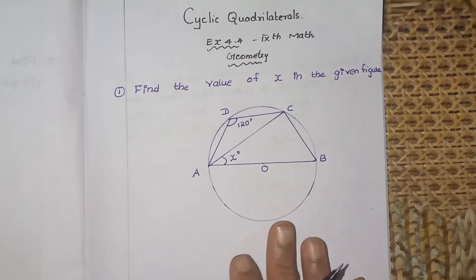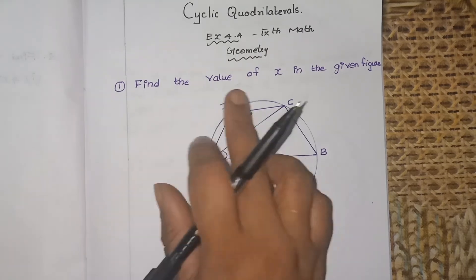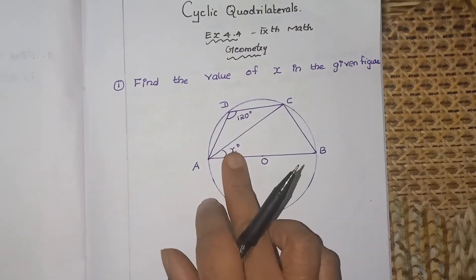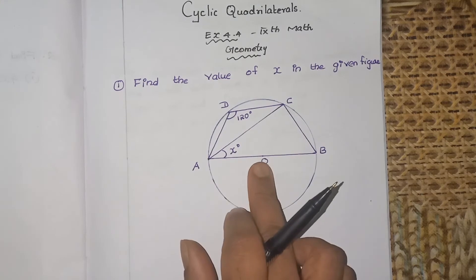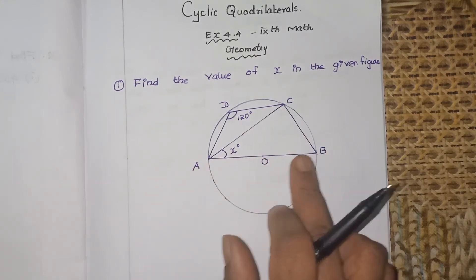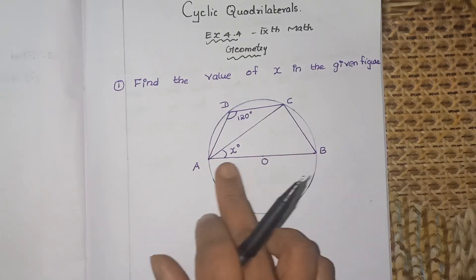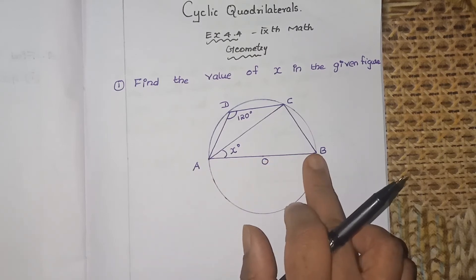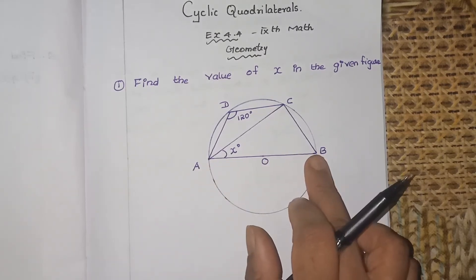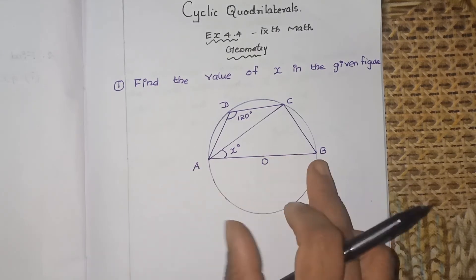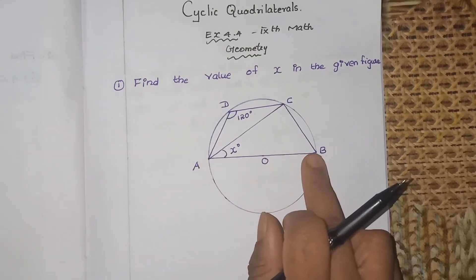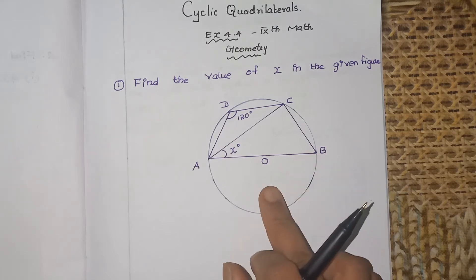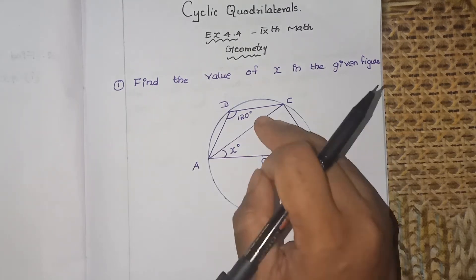We are going to use that property here. The question is: find the value of x in the given figure. You can see a circle with center O. AB is a chord — the longest chord — passing through the center of the circle, so AB is actually the diameter.